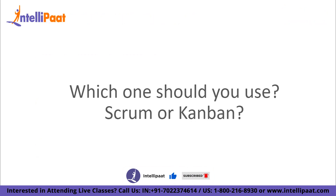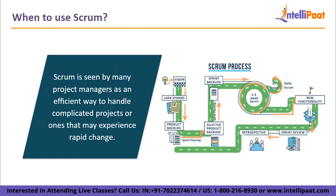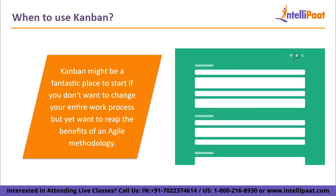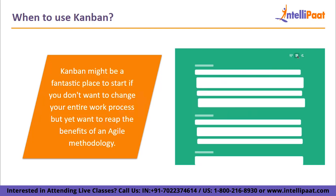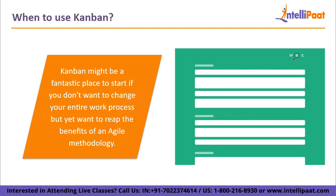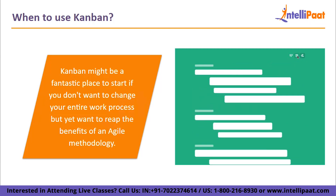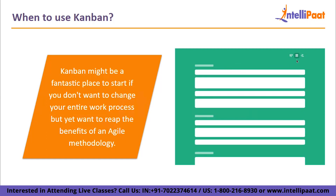So the big question is whether to choose Scrum or Kanban. Scrum has been associated with increased output, accelerated delivery, reduced expenses and improved quality. Many project managers see Scrum as an efficient way to handle complicated projects or ones that may experience rapid change. If your sector experiences frequent change or your project needs room to adjust to input, Scrum might be a good choice. Kanban has been demonstrated to increase productivity, foster a culture of continuous improvement and improve visibility. Kanban can work alongside Scrum and other existing procedures. If you don't want to change your entire work process but want to reap the benefits of an Agile methodology, Kanban might be a fantastic place to start.